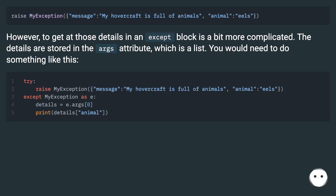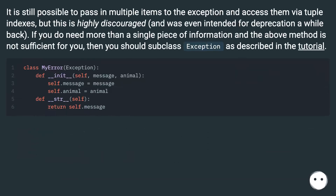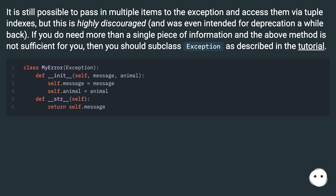The details are stored in the args attribute, which is a list. It is still possible to pass in multiple items to the exception and access them via tuple indexes, but this is highly discouraged and was even intended for deprecation a while back. If you need more than a single piece of information and the above method is not sufficient, then you should subclass exception as described in the tutorial.